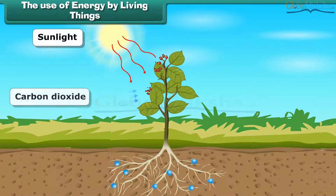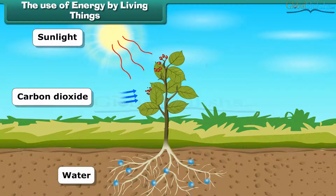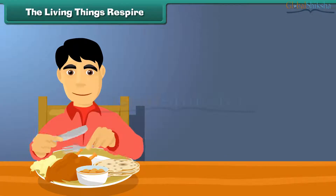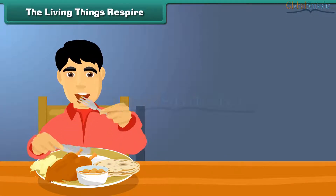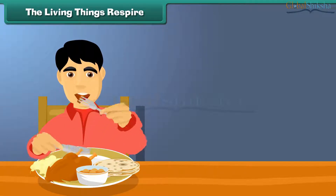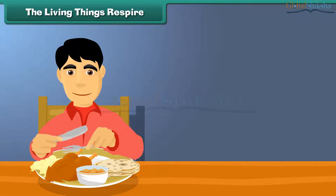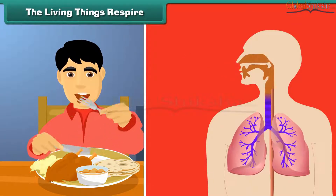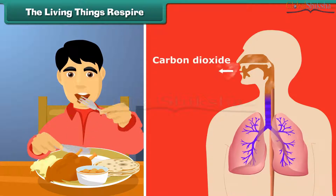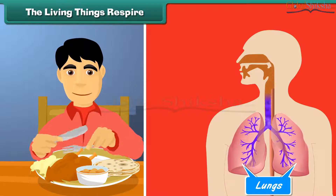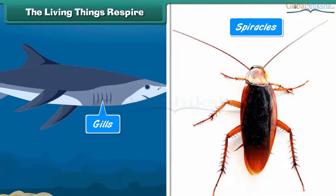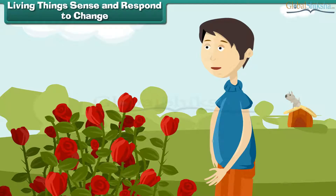Plants require sunlight, carbon dioxide, water, and chlorophyll for the process of photosynthesis. Living things respire. Living things require oxygen to get energy from food. They get the required oxygen by the process of respiration. During respiration, oxygen is breathed in and through the blood it reaches each and every cell of the body. Human beings have lungs for respiration, fishes have gills, and cockroaches have spiracles.